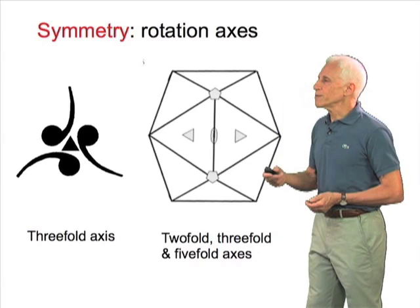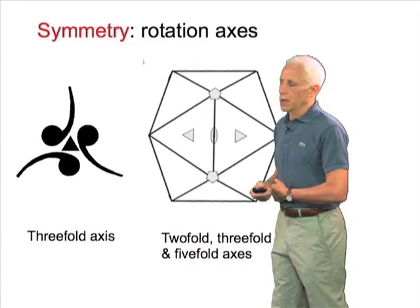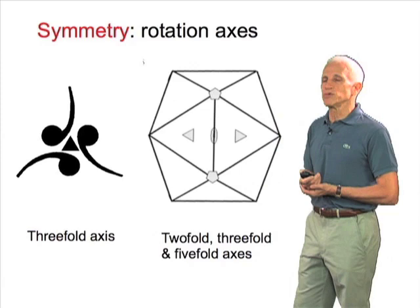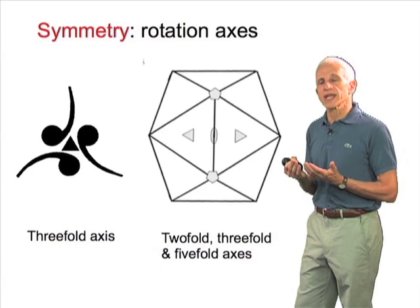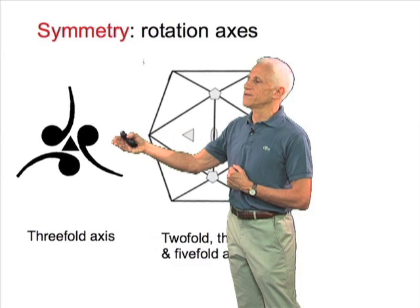So, let's begin with symmetry. What does symmetry mean? Symmetry, as suggested by the image on the left, means that there's some operation—in the case of physical objects, some physical operation like a rotation—that brings the object into self-coincidence.